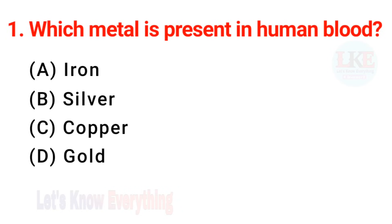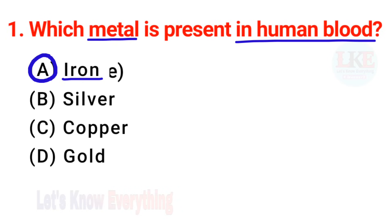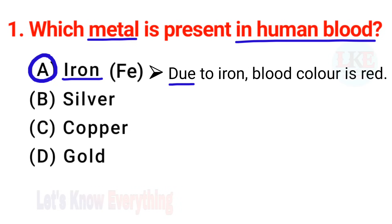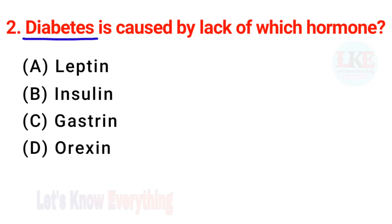First question: which metal is present in human blood? Right answer option A — iron, symbol is Fe. Don't forget it — due to iron, blood color is red. Question 2: diabetes is caused by lack of which hormone? Right answer — insulin.